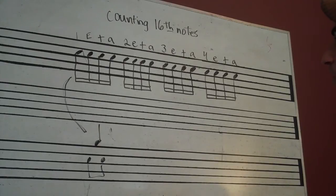We count these as one E and a, two E and a, three E and a, four E and a, one E and a, two E and a, three E and a, four E and a.